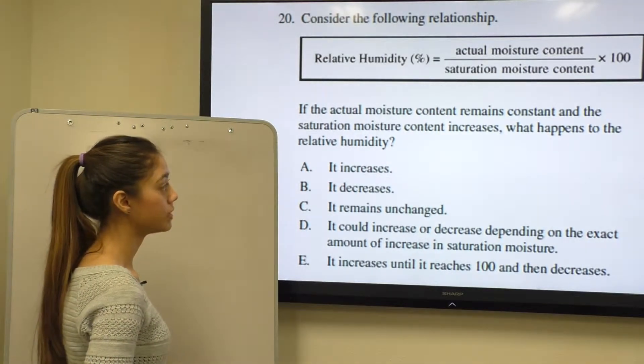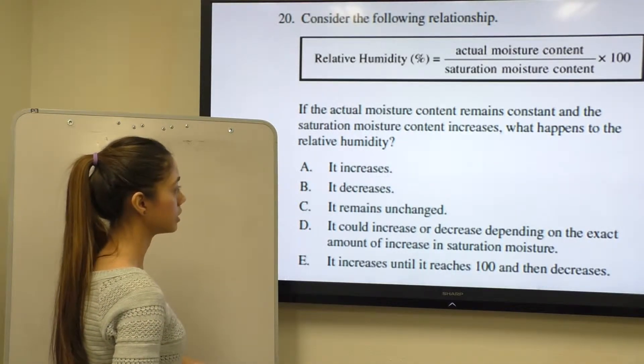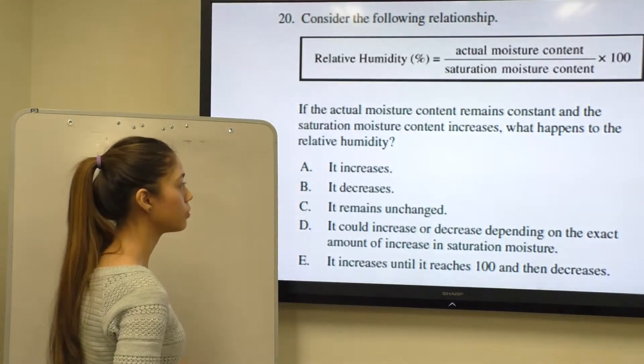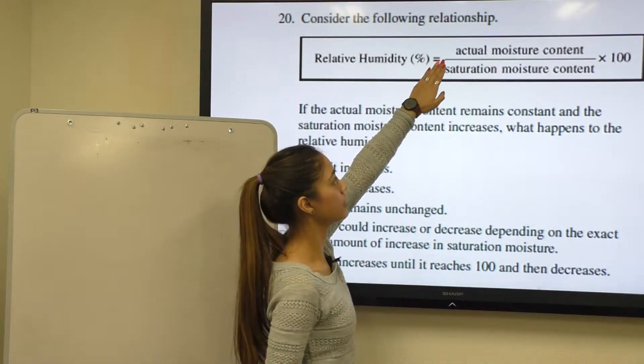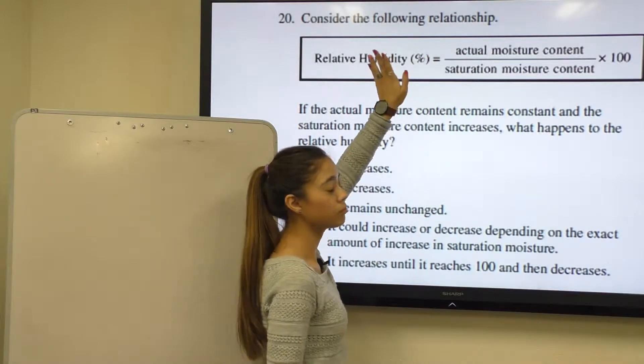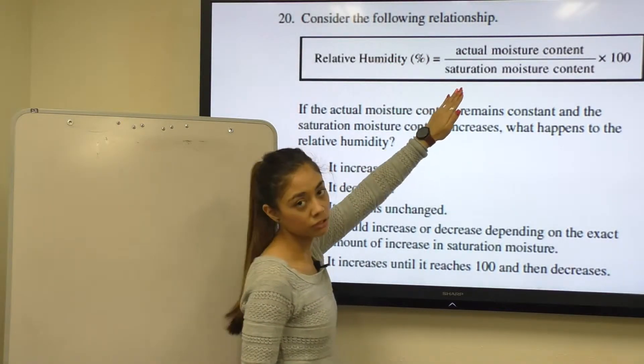If the actual moisture content remains constant and the saturation moisture content increases, what happens to relative humidity? In this case, the top number in this fraction, actual moisture content, will remain the same while the bottom number would increase.